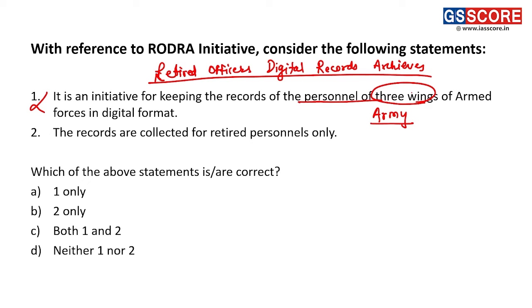The second statement says the records are collected for retired personnel only — this is a correct statement. These records are being collected to solve various problems related to the pensions of retired officers. So the first statement is incorrect and the second is correct. The answer is B — 2 only.